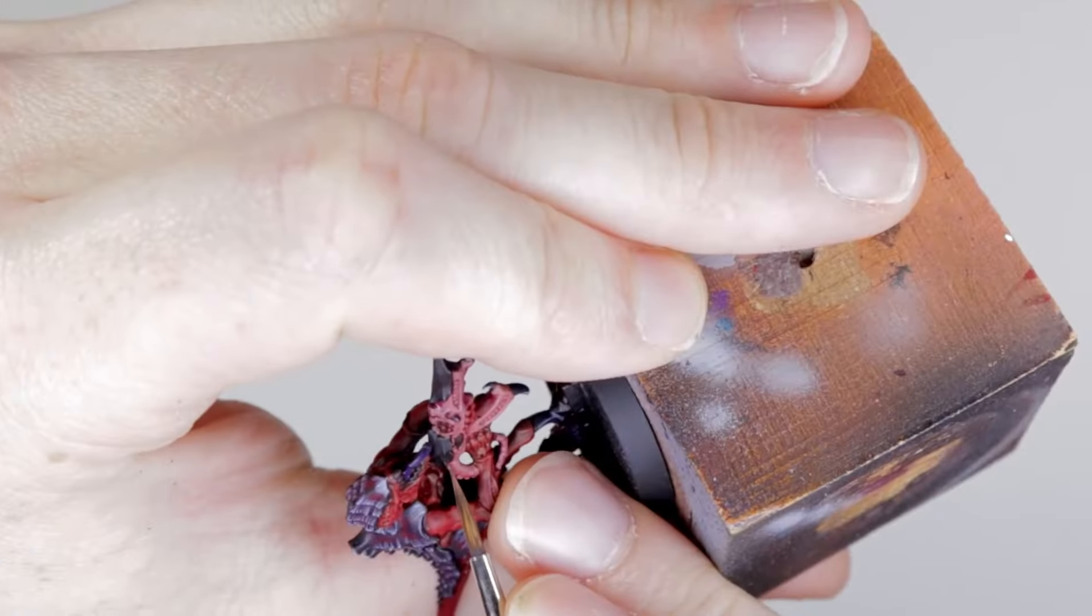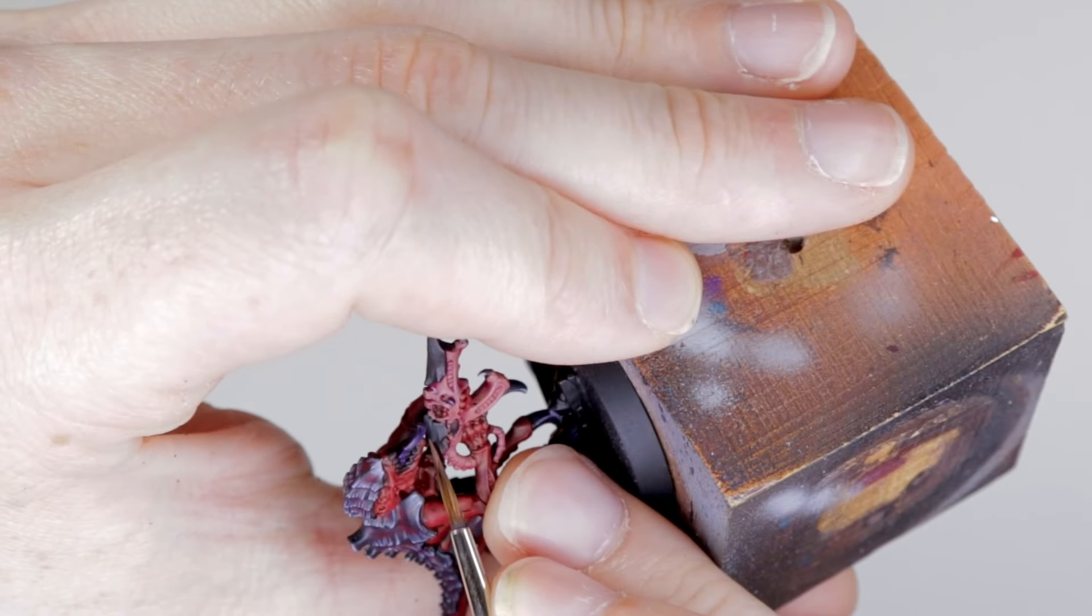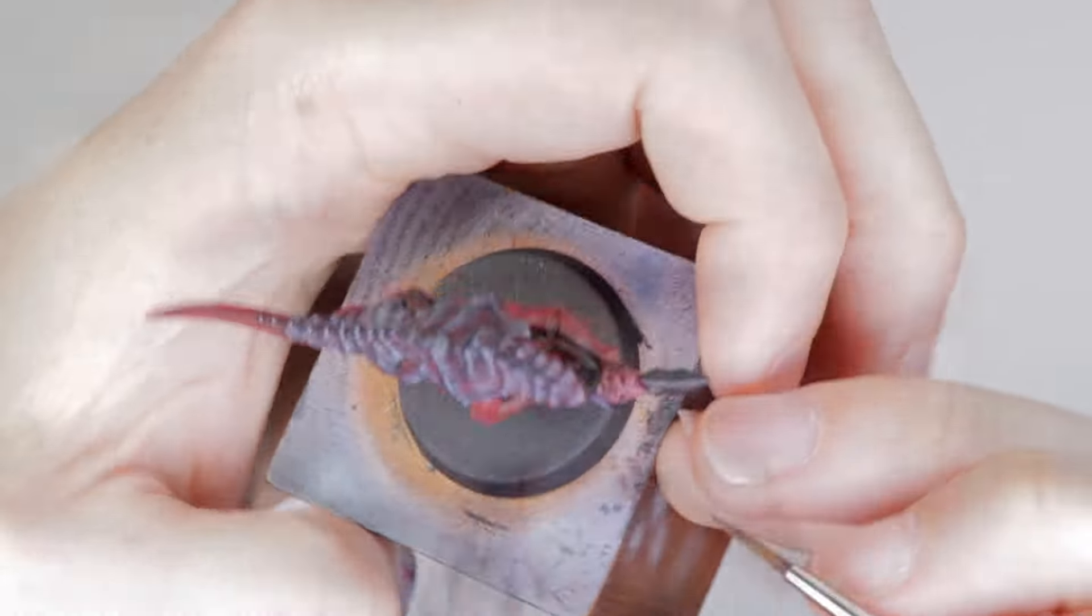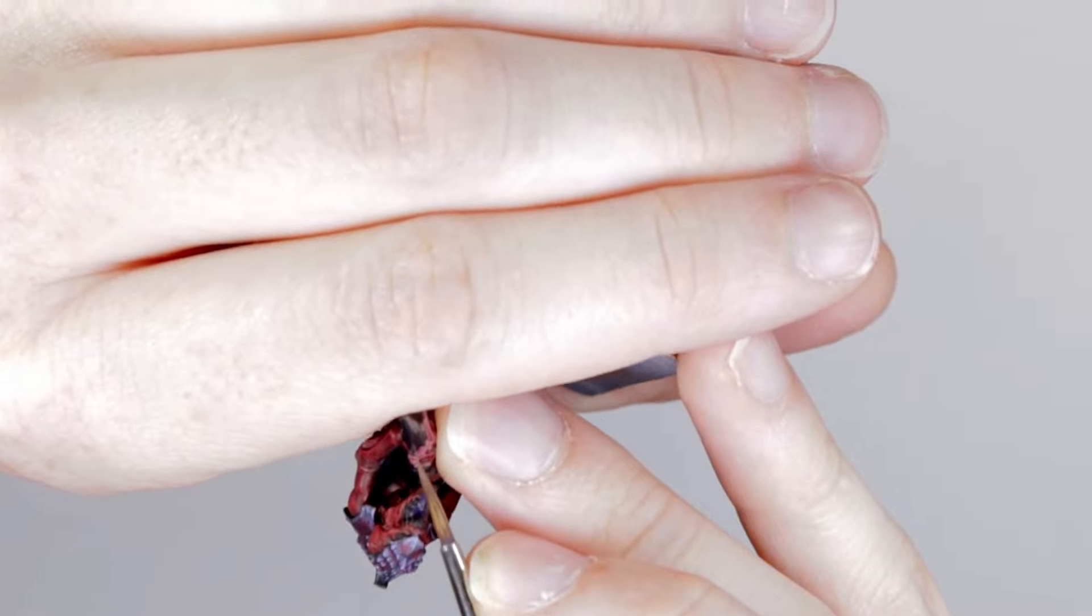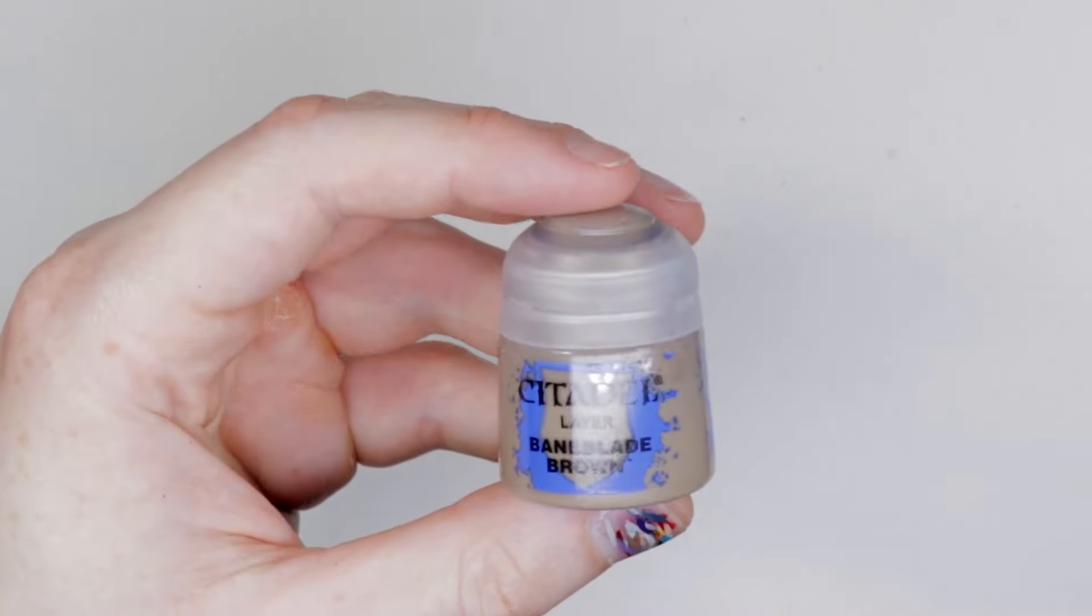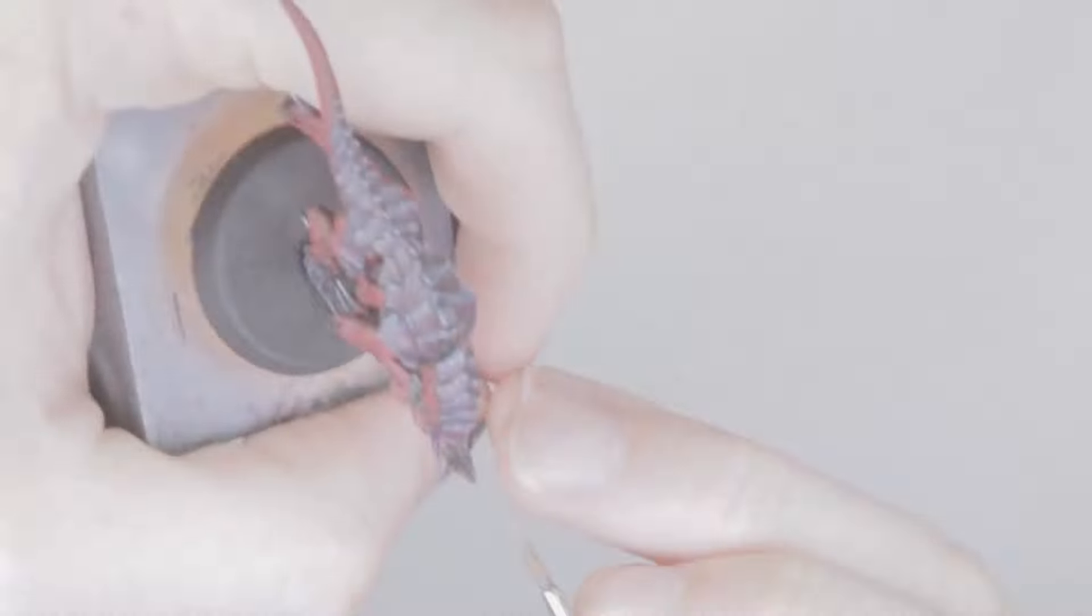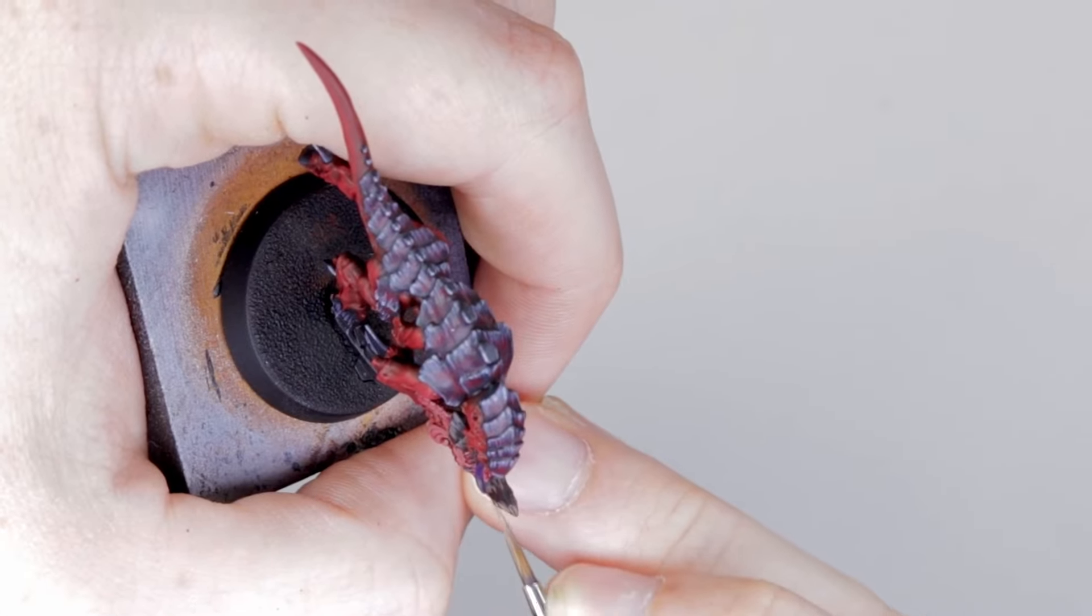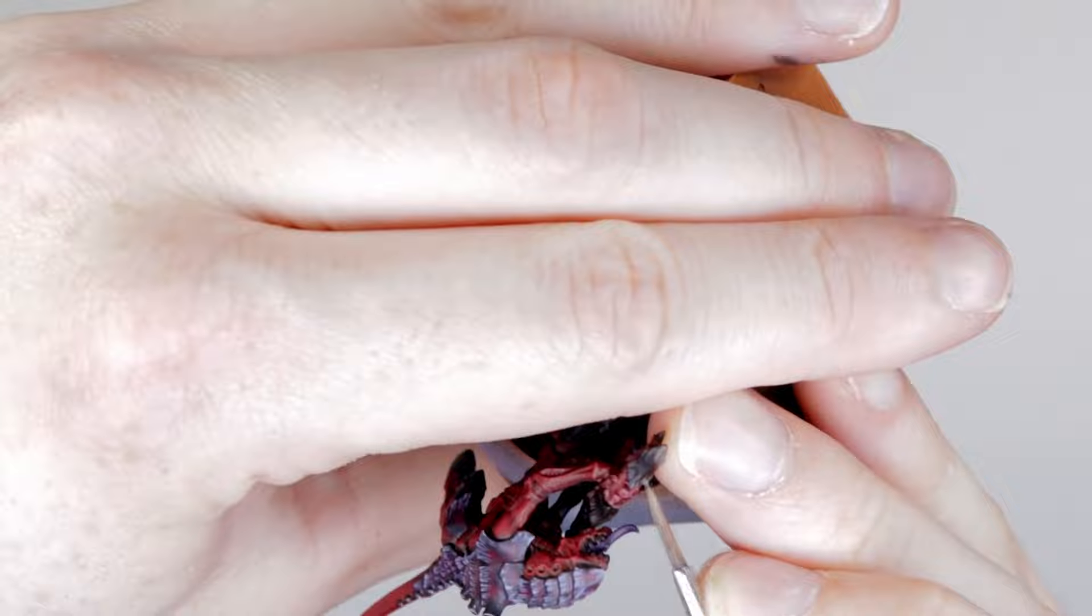With those fleshy bits done, we're going to do the chitin panels on the gun starting with Gorthor Brown. We're doing just a feathering motion in the same way that we did with the chitin panels for the Termagant itself. Feathering motion along the edge of the panels on the gun. Then we'll highlight that with Baneblade Brown. Just like we did with the Administratum Grey, this isn't an edge highlight. This isn't the same feathering motion. We're just picking out parts of the edge of that armor.